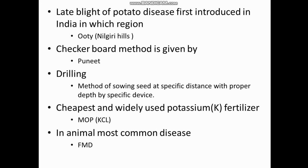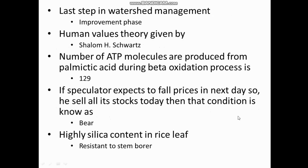The cheapest and widely used potassium fertilizer is MOP. In animals, the most common disease is FMD - Foot and Mouth Disease. The last step in watershed management is the improvement phase.